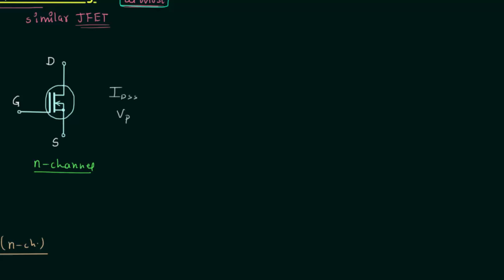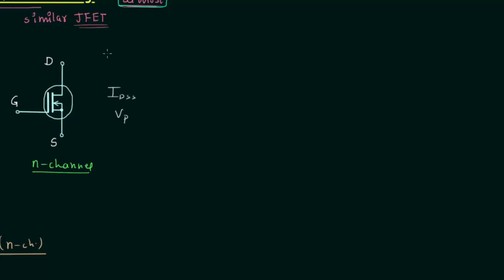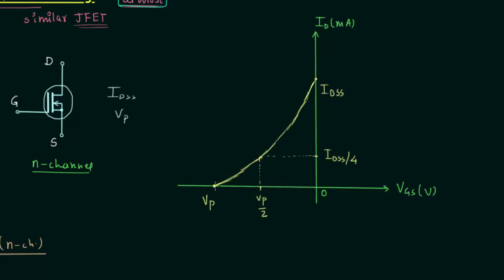The initial steps remain the same as in JFET — you need to obtain three points. The first point is obtained by making ID equal to 0A in Shockley's equation, giving VGS equal to Vp (the pinch-off voltage). The second point is obtained by making VGS equal to 0V, giving ID equal to IDSS, the saturated drain current. The third point is obtained by making VGS equal to Vp/2, which gives ID equal to IDSS/4.